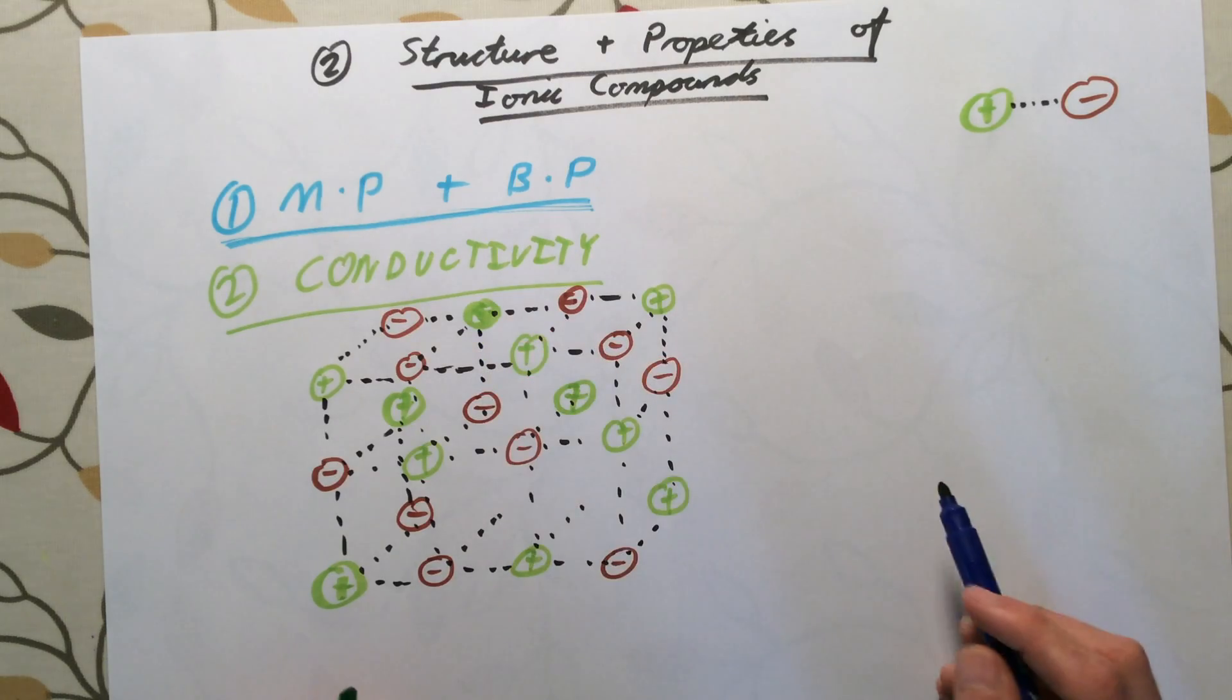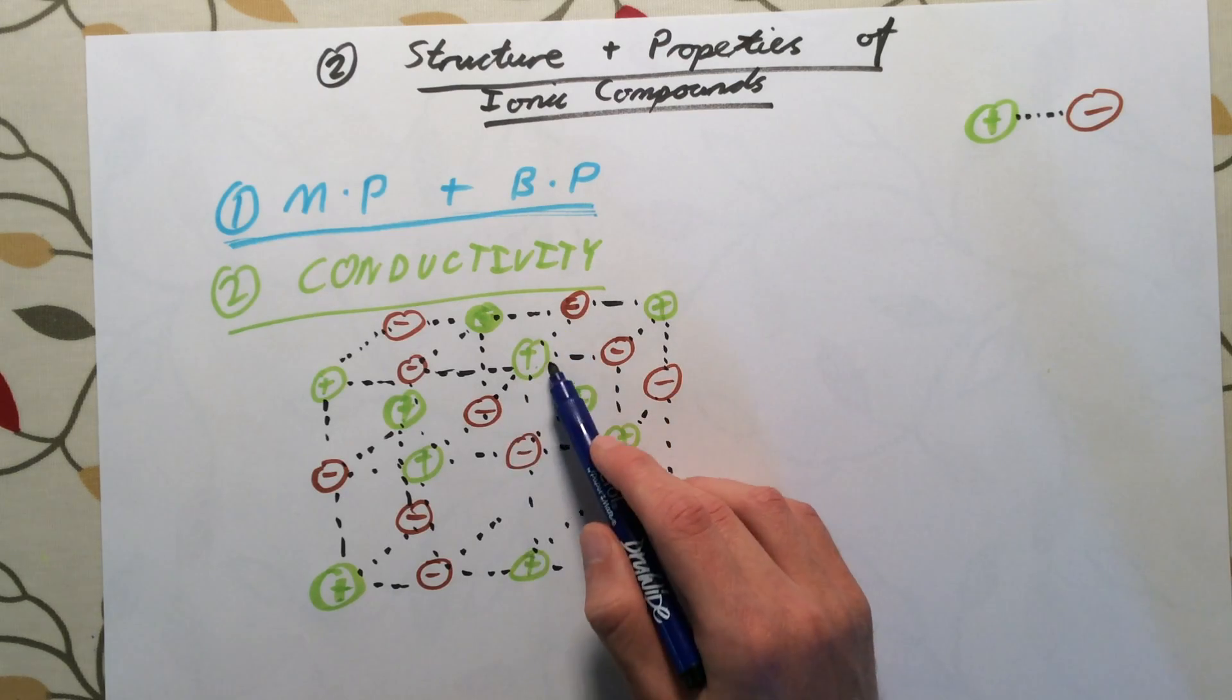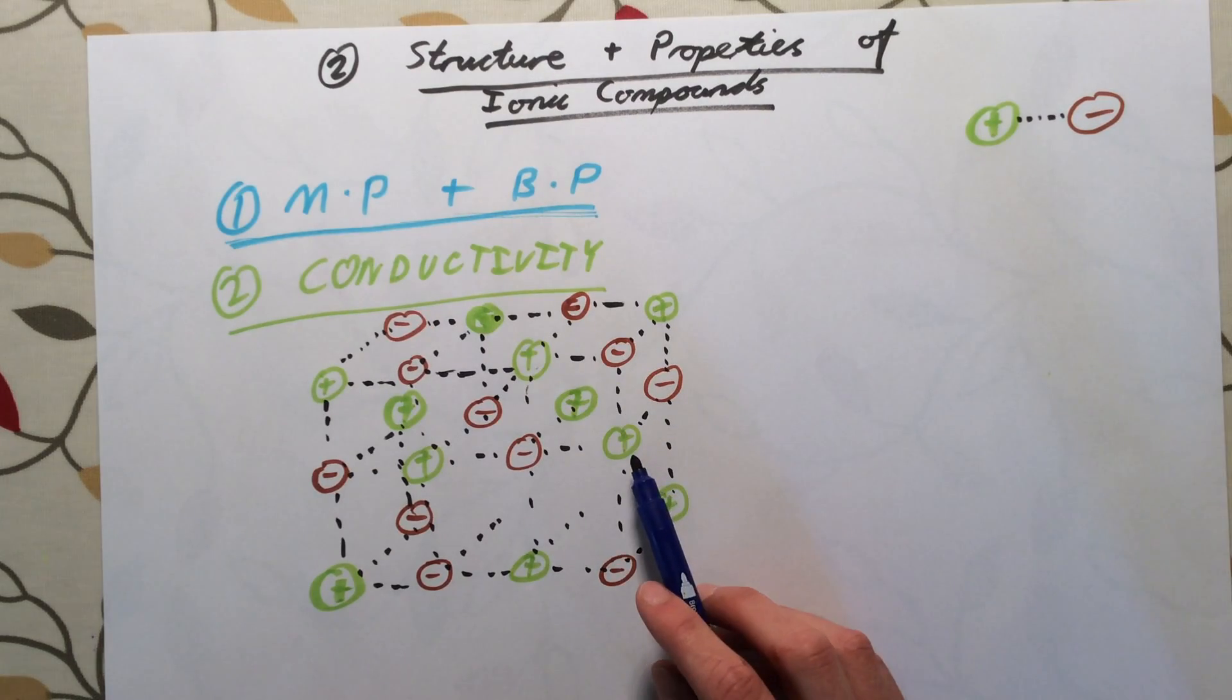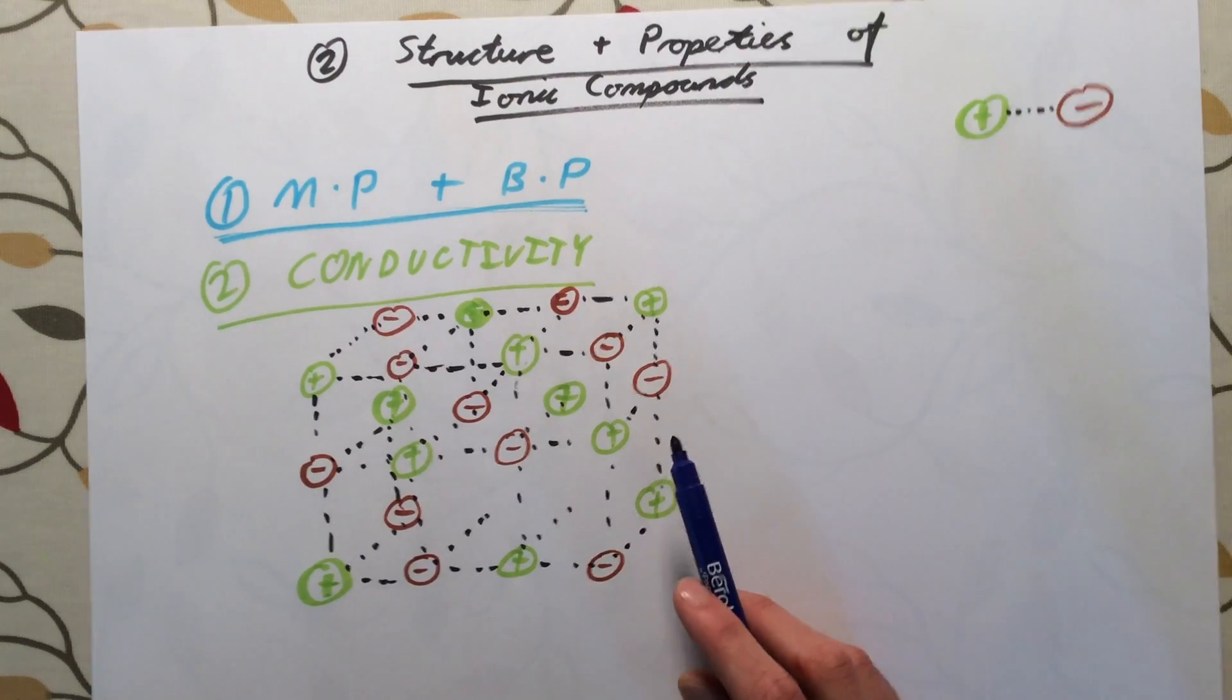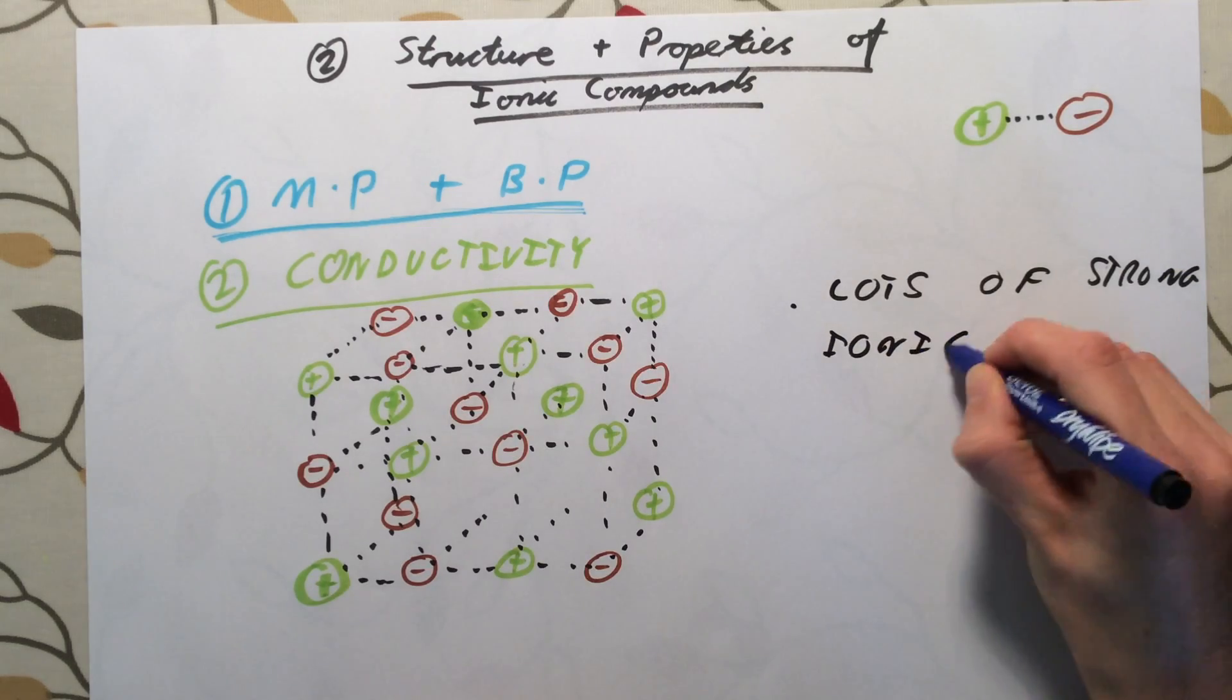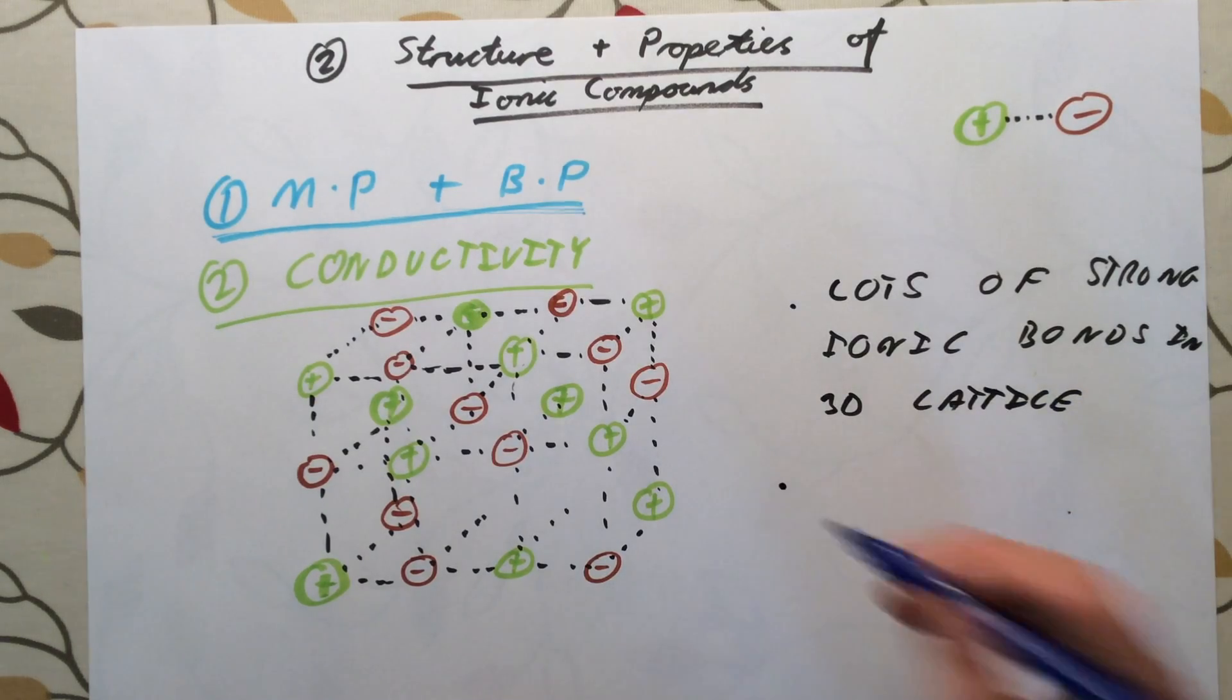This is just a very small section. Hopefully you get the idea that if you were to take any positive ion, it's going to be surrounded by - for sodium chloride's case - six negative ions. Every single ion, positive or negative, is surrounded by a large number of oppositely charged ions, and between all of these ions there are very strong electrostatic forces or ionic bonds. So I've got lots of strong ionic bonds in my 3D lattice.